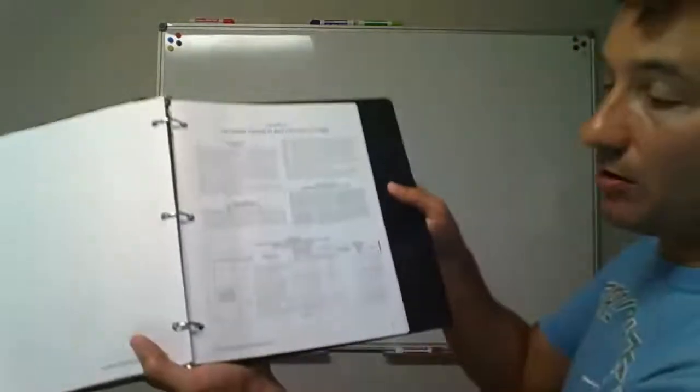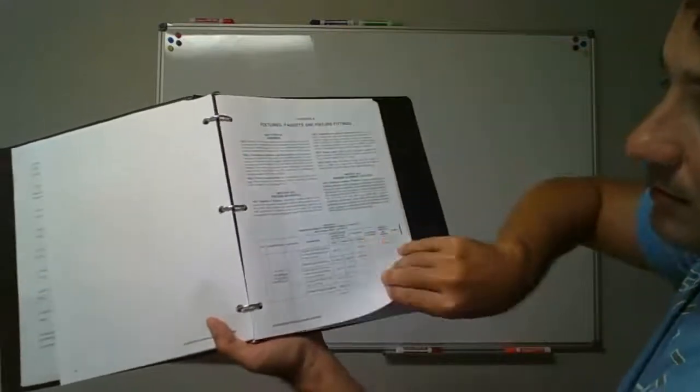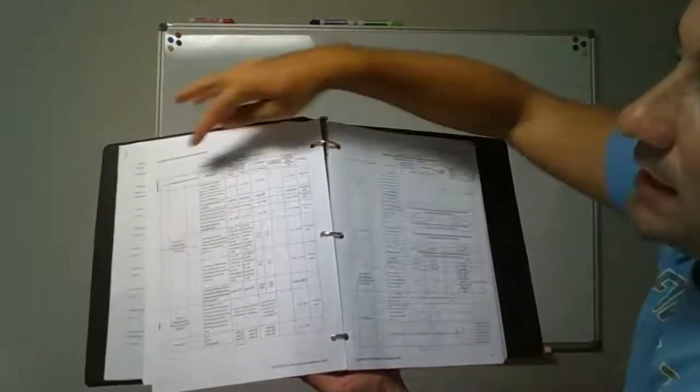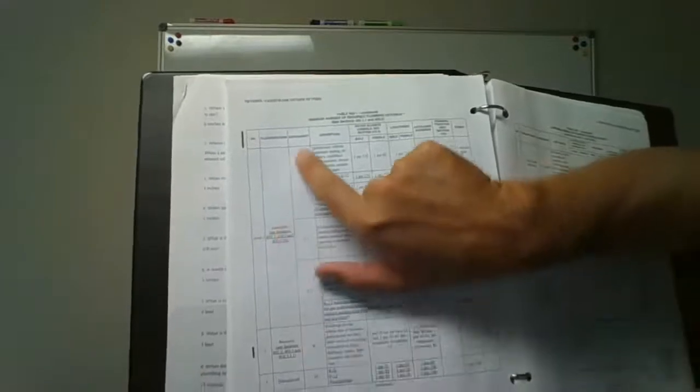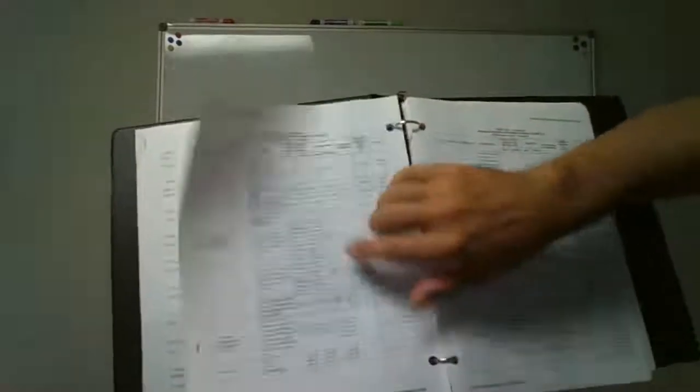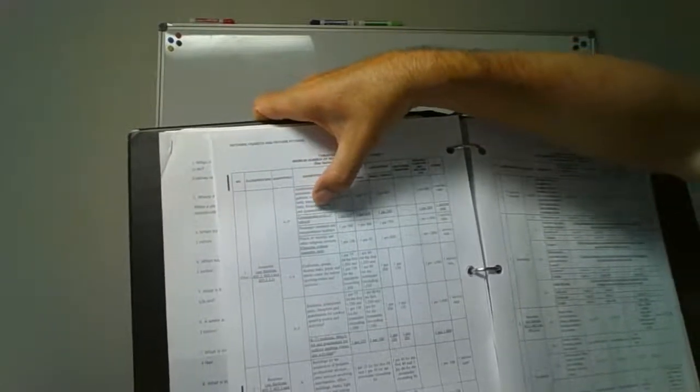Looking at the chart, it gives you a classification on the left, the occupancy type, and a description of the occupancy. Under 'Assembly,' you have A1 through A5. For example, A3 includes auditoriums without permanent seating, art galleries, exhibition halls, museums, lecture halls, libraries, arcades, gymnasiums, places of worship, churches without assembly halls, and passenger terminals.